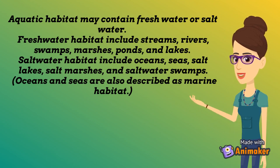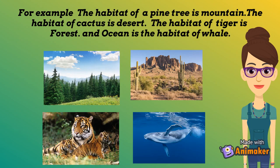Oceans and seas are also described as marine habitat. For example, the habitat of a pine tree is mountain. The habitat of cactus is desert. The habitat of tiger is forest. And ocean is the habitat of whale.